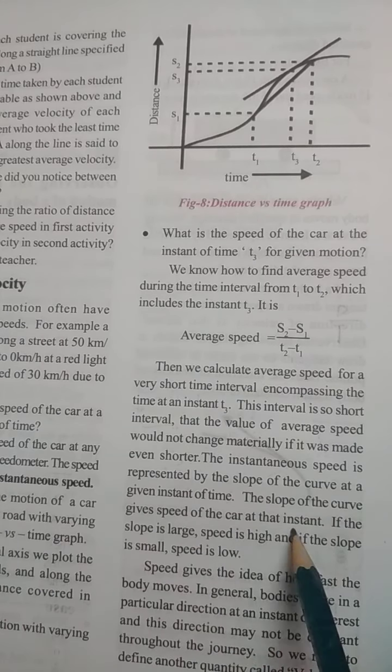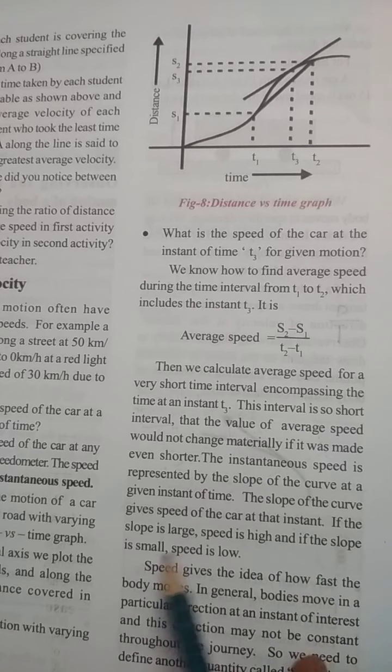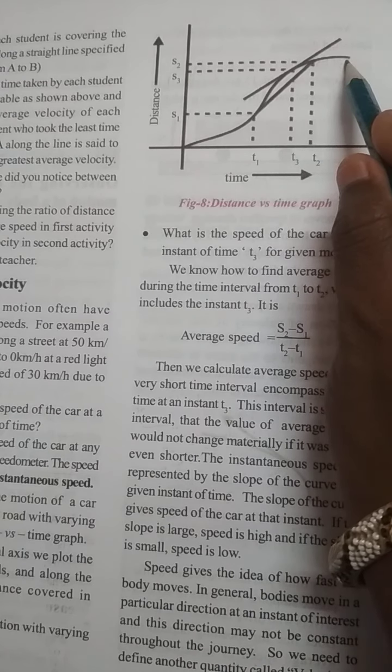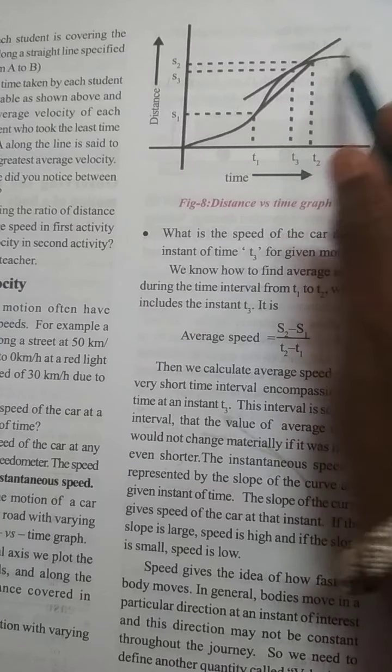If the slope is large, speed is high. And if the slope is small, speed is low.